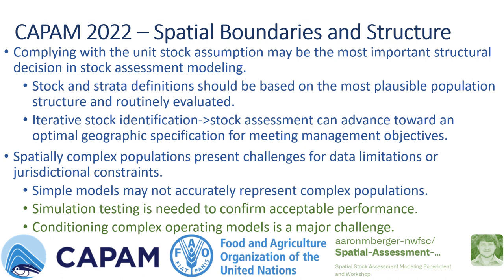I'll end where we ended up last fall at the CAPM workshop on good practices in stock assessment when it comes to spatial boundaries and structure. We concluded that complying with the unit stock assumption may be the most important structural decision in stock assessment modeling — that the stock boundaries and strata definition should be based on the most plausible population structure and routinely evaluated. We can iteratively advance information on stock identification and how it's represented in stock assessment, so that we iteratively approach an optimal geographic specification to meet our management objectives.